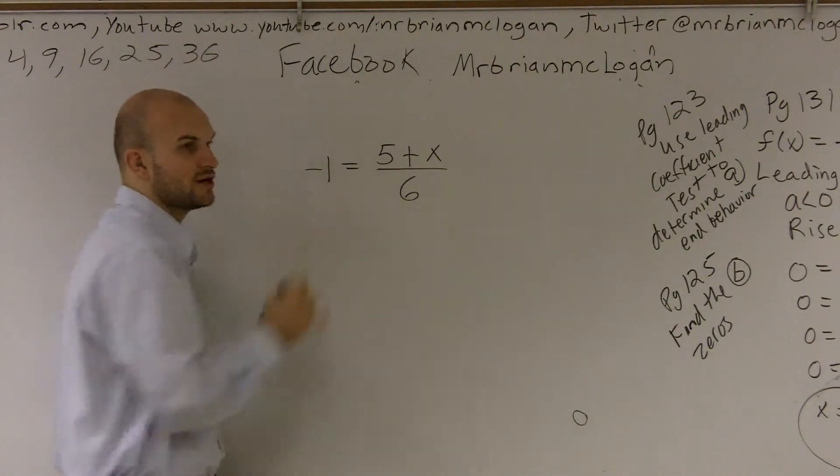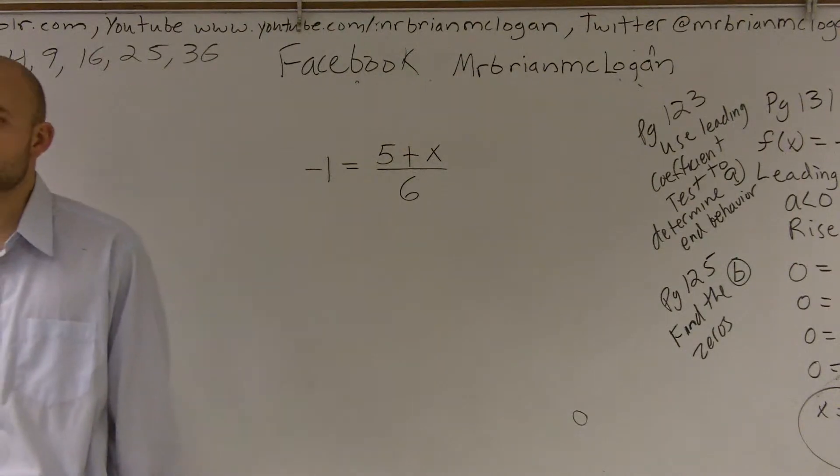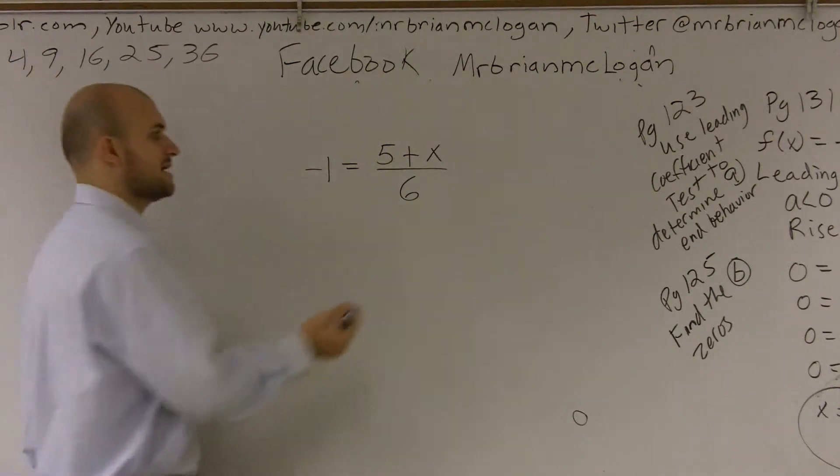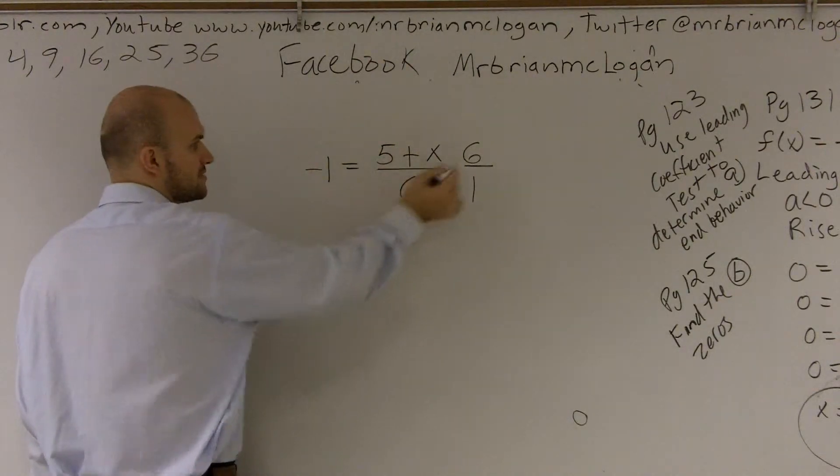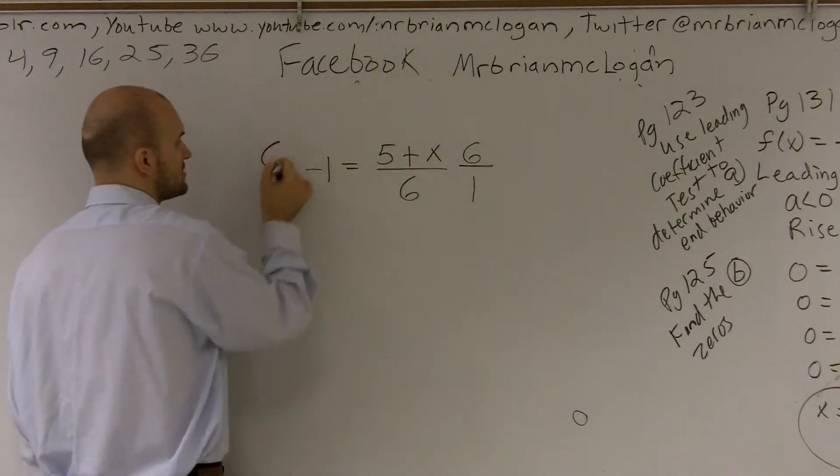To simplify them, we're going to want to get rid of our denominator. The way to get rid of our denominator is to multiply by that denominator, or multiply by the reciprocal. So it's 1 over 6 multiplied by 6 over 1 on both sides.